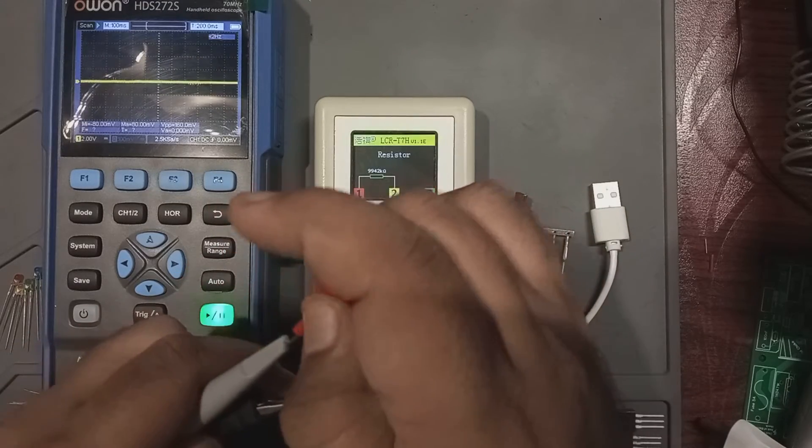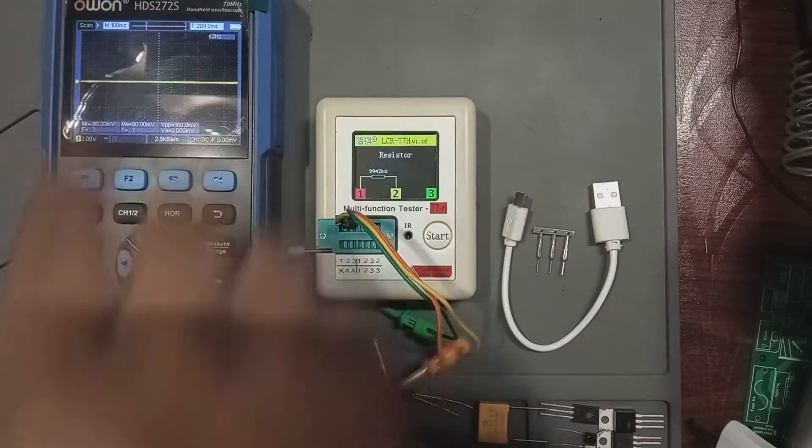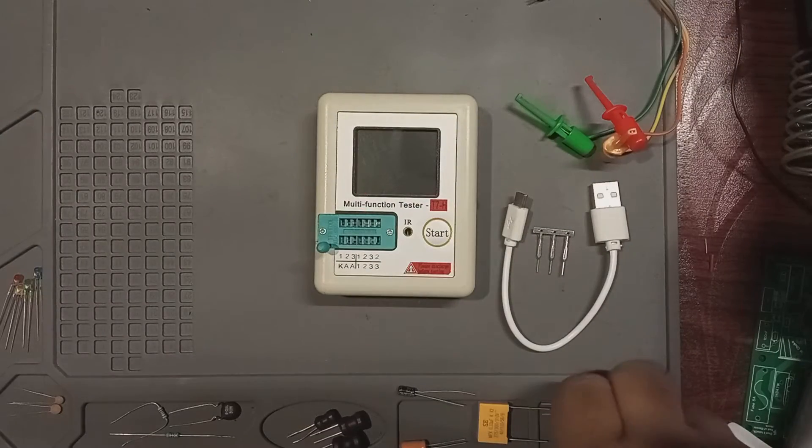Now that we have set up the oscilloscope, let's move it out of the way and see the meter in action with different components. Let's begin by testing a transistor.